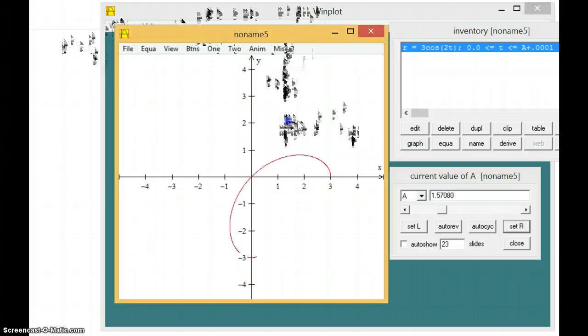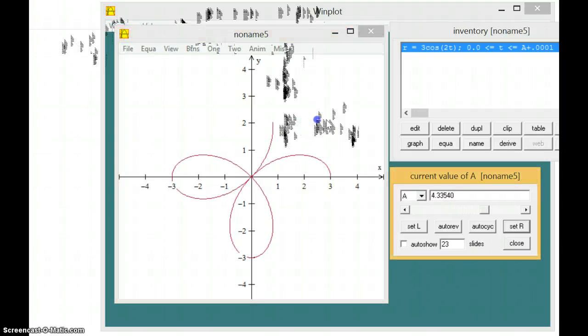And this is how it traces out over the range of its values.